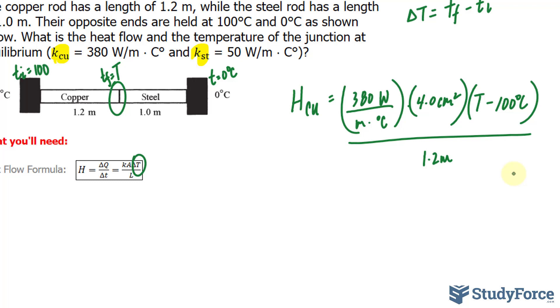I'll do the exact same thing for the steel. Before I proceed, I just want to show you that the constant is different because we're dealing with steel here, and over here it's copper. The area is the same, but the expression for the difference in temperature is a little different. Notice that we have T minus 0, as opposed to T minus 100, over 1 meter in length.